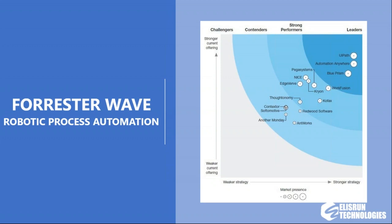Now let's look at what RPA tools are available. Think of RPA as a platform like a classroom with many students. To do automation tasks, we have different products such as UiPath, Automation Anywhere, NICE Systems, Blue Prism, WorkFusion, and many more RPA products in the market. Businesses wanting to automate may find it difficult to choose which product to use.